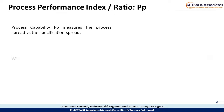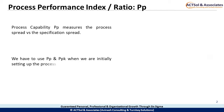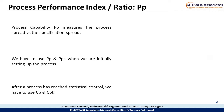We have to use PP and PPK when we are initially setting up the process. After a process has reached statistical control, we have to use CP and CPK.